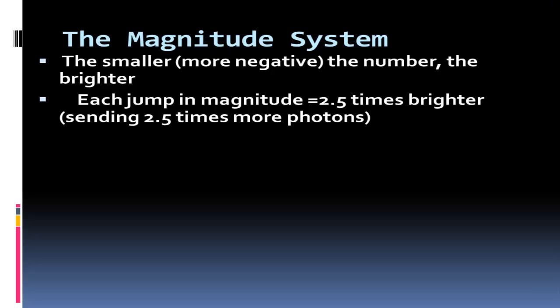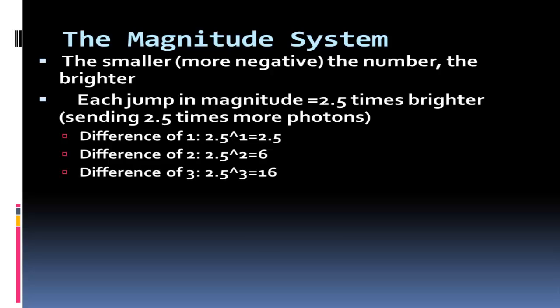If we had a difference of one - a star of magnitude two and a one - the one is actually 2.5 times brighter. If we had a difference of two, going from a four to a two, it would be 2.5 squared, which is about six. A difference of magnitude of three works out to be 16. You want to be able to calculate this.